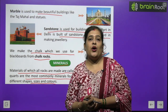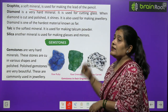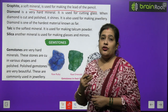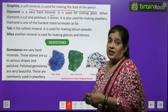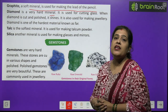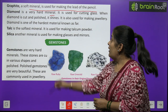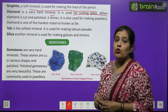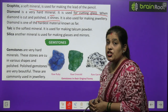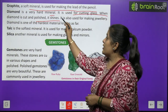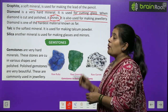Minerals come in different shapes and colors. Graphite is a soft mineral used for making the lead of a pencil. Diamond is a very hard mineral — it is used for cutting glass. When diamond is cut and polished, it shines.